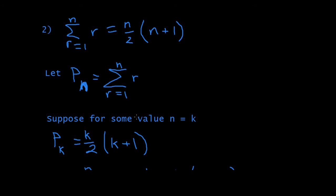Then, we say, suppose for some value, N is equal to K. We substitute K inside, and we will get PK is equal to K squared. Just using what it's equal to. K divided by 2 times K plus 1.